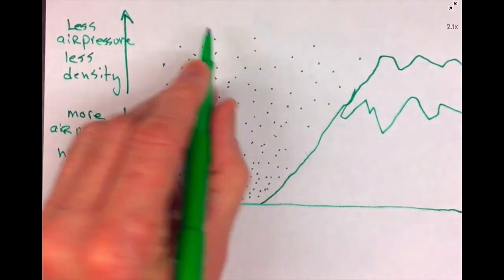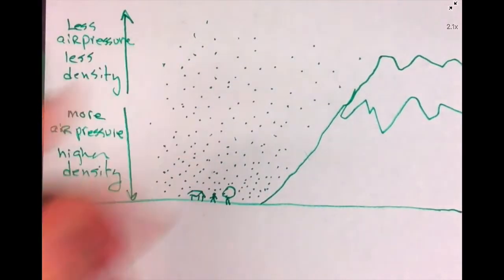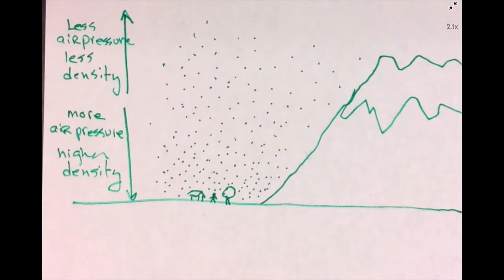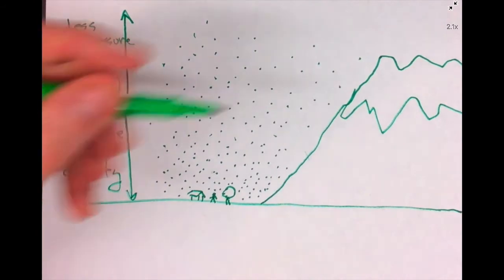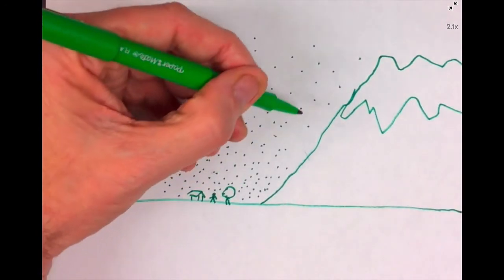Density, of course, would be how many molecules you have in a given amount of space. Now what also happens is down here they're bumping into stuff and moving around with a fair amount of speed, and they're transferring that energy. The name for that energy when it transfers is also heat. So what happens as you go up in altitude, there's fewer air molecules to be bumping into stuff to transmit that heat energy, this thermal energy. So it gets colder as you go up in altitude as well.